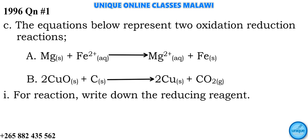Let's see how I can answer this redox reaction problem. It was question number one from 1996 - 26 years ago. The question says the equations below represent two oxidation-reduction reactions. Equation A: magnesium solid reacting with iron in aqueous solution to give magnesium in aqueous solution plus iron in solid state. Equation B: two moles of copper oxide reacting with carbon to give two moles of copper and carbon dioxide. We have been asked to write the reducing agent of which reaction.